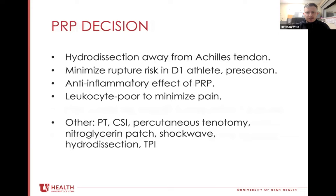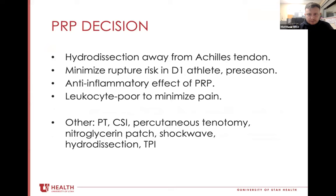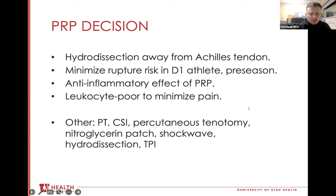As far as our PRP decision-making, the goal was to use a low-risk injectate that we could use to hydrodissect away the Achilles tendon. Ultimately with PRP, it minimizes rupture risk in a D1 athlete, especially compared to something like cortisone. It's also pre-season, so we have the whole season ahead. There's a potential anti-inflammatory effect with PRP, and we chose leukocyte-poor PRP to minimize his pain. Other considerations included continuing with PT, but this wouldn't help acutely. Since he continued to have worsening pain despite rehab, we felt this was almost an ideal time to intervene given the pre-season window.